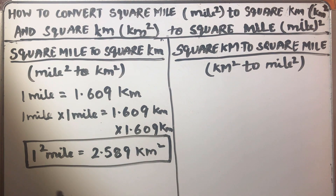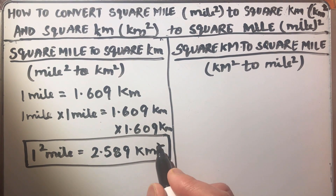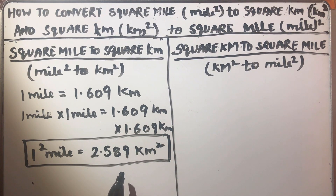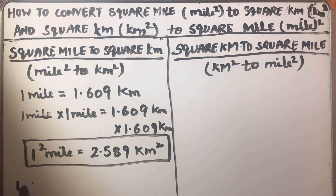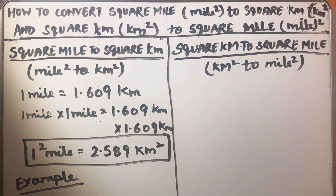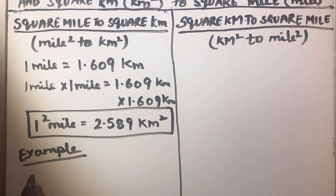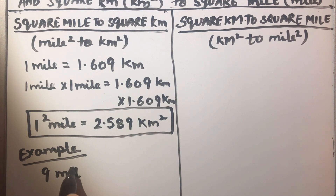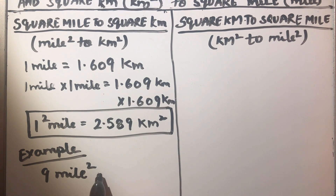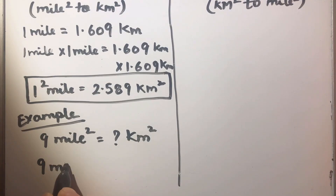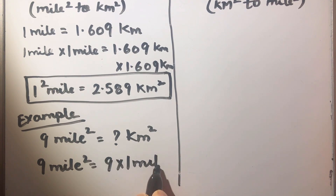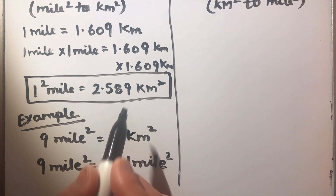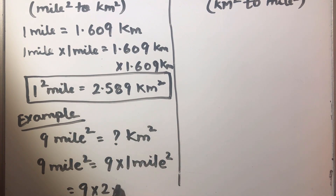So this is our conversion factor we need to use to convert from square miles to square kilometers. Let's understand this with an example. Suppose we need to find out how many square kilometers are there in 9 square miles. We can write 9 square miles as 9 times 1 square mile, and we know that 1 square mile is 2.589 square kilometers.